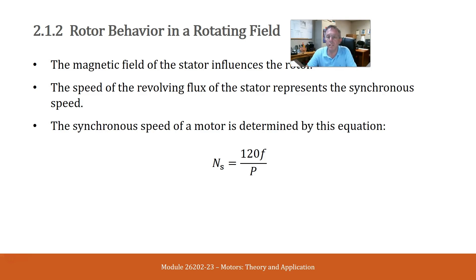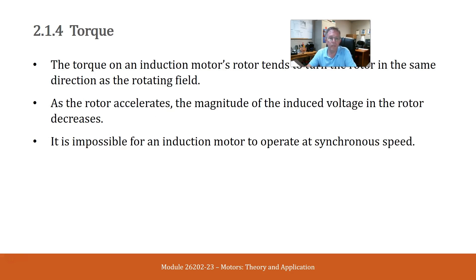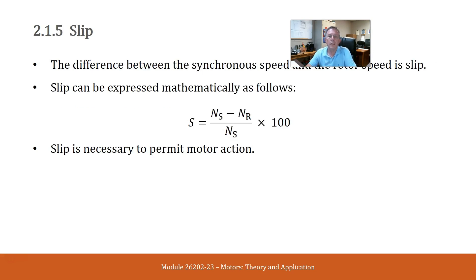The speed of the revolving flux of the stator represents the synchronous speed. The synchronous speed of a motor is determined by this equation. Current flowing through a conductor sets up a magnetic field around the length of the conductor. A conductor in the magnetic field would produce a current when the magnetic lines of flux cut across the conductor. There is no physical connection between the magnetic field and the conductor. The torque on an induction motor's rotor tends to turn the rotor in the same direction as the rotating field. As the rotor accelerates, the magnitude of the induced voltage in the rotor decreases. It is impossible for an induction motor to operate at synchronous speed. The difference between the synchronous speed and the rotor speed is slip.